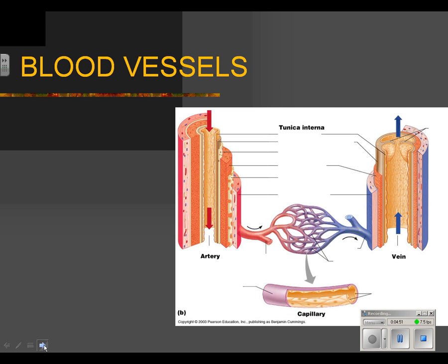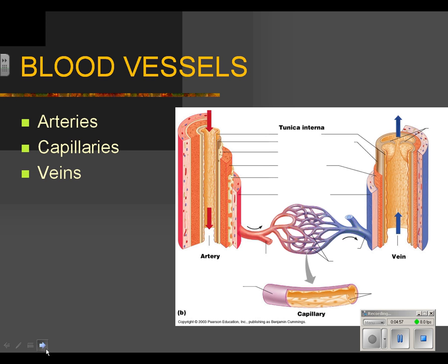Blood vessels: there are three types — arteries, capillaries, and veins — and again, they are all one-way streets. An artery is going away from the heart. Veins are going to the heart. Capillaries are in between. Blood coming away from the heart travels down an artery, then branches into a set of capillaries.